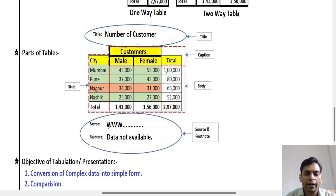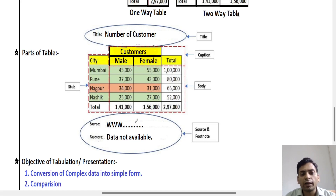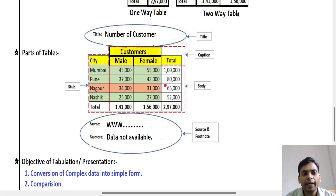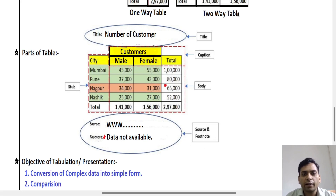We also write the source below the table — for example, www.investing.com or moneycontrol.com — to indicate where the data was collected from. If any specific detail is incomplete, we place a star on that entry and write a footnote explaining that the data is not available or incomplete. So the parts of a table are: title, caption, stub, main body, source, and footnote.